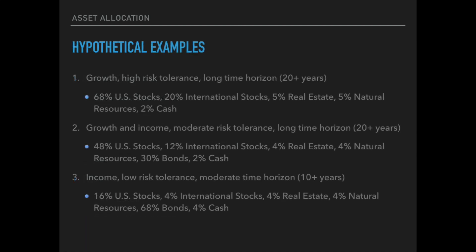In strategic asset allocation, portfolios are created to align with an investor's goals, risk tolerance, and time horizon. In scenario number one, we have an investor whose primary objective is growth. They have a high risk tolerance and a long-term time horizon of 20-plus years. This investor could have a portfolio with 68% U.S. stock, 20% international stocks, 5% real estate, 5% natural resources, and 2% cash — a growth-oriented portfolio with no exposure to bonds, with 98% in securities providing long-term growth and dividend income.